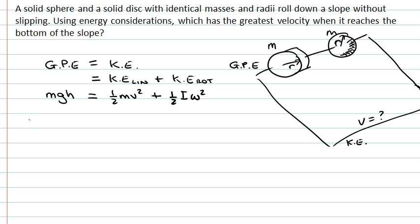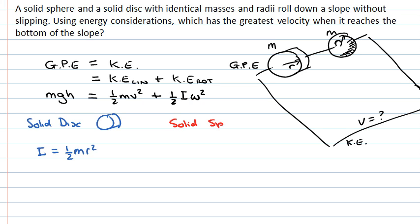First let's consider our solid disk. From the standard formula sheet, the moment of inertia of a solid disk is one-half times the mass times the radius squared. For the solid sphere, again from the formula sheet, the moment of inertia is two-fifths times the mass times the radius squared. Since the masses and radii are the same, the only difference is the constants, and we can see that the moment of inertia of the solid disk is greater than that of the solid sphere.